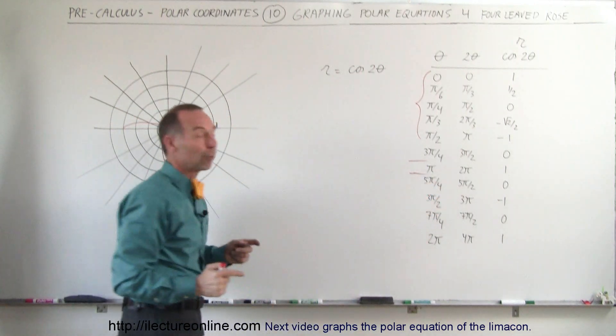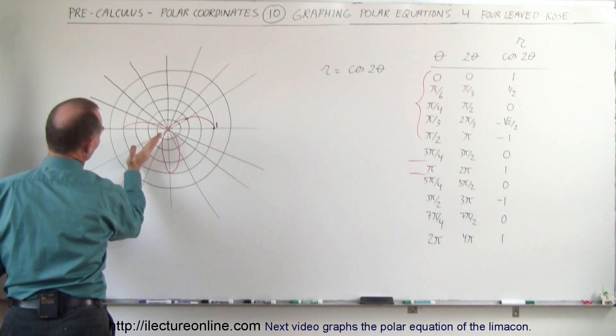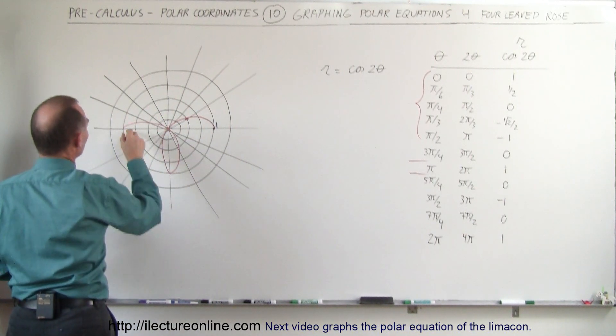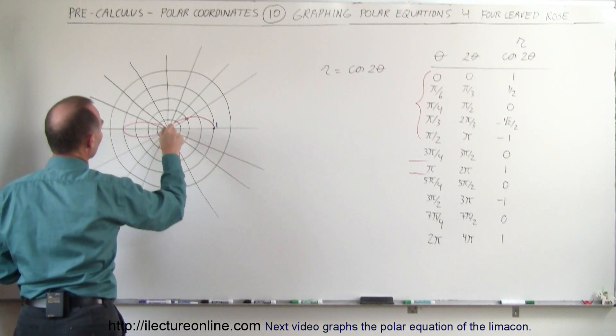Okay, now 5 pi over 4, we're back down to 0. So 5 pi over 4, we're pointing in this direction, we're back to 0. That means this graph goes back in and goes like this.